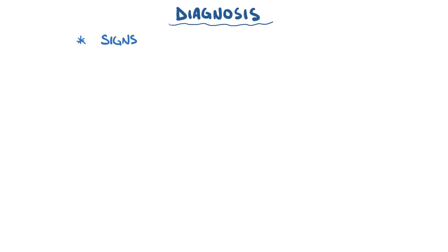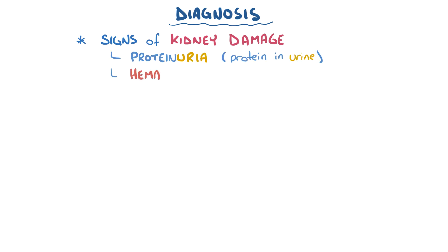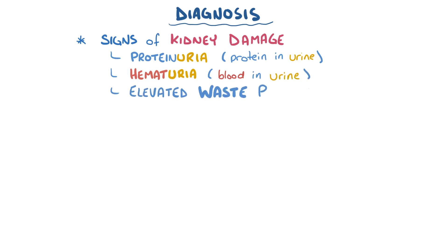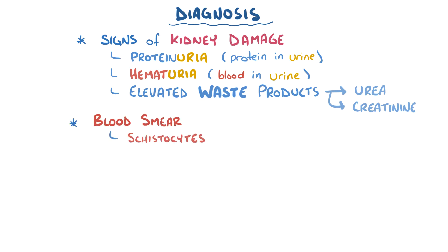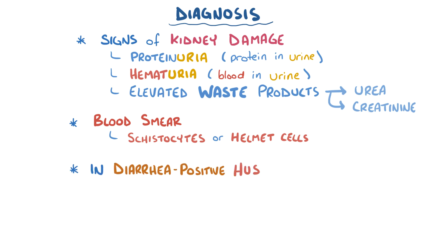Hemolytic uremic syndrome is diagnosed by evaluating the urine for signs of kidney damage, like proteinuria — which is excess protein in the urine — and hematuria, which is the presence of blood in the urine. There might also be elevated waste products like urea and creatinine in the urine. On a blood smear, there might be evidence of schistocytes or helmet cells, and in cases where there's a history of bloody diarrhea, the stool can be cultured to look for the culprit bacteria.